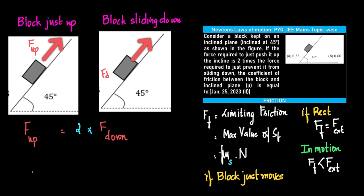As we discussed in the previous problem, the key word here is 'just prevent it from' and 'just push it up.' Because we know that if the block is just moving, the value of the frictional force would be equal to the limiting friction — the maximum value of static friction — which is numerically equal to the coefficient of static friction times the normal reaction.